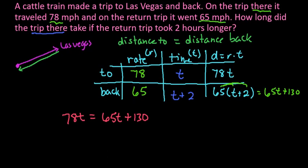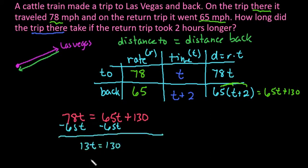And then we can solve this problem. So what we're going to do is subtract the 65T from both sides so that we get our variable on the same side. So we end up with 13T equals 130. And so we can see that T is 10.